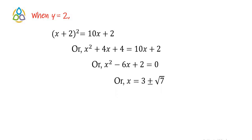If we solve this equation, we get two values of x, which is 3 plus root 7 and 3 minus root 7. None of the values of x is a natural number, so these x values are not suitable values. Hence, there is no such value of x that exists corresponding to y equal to 2.